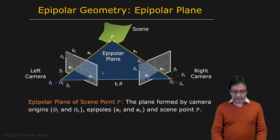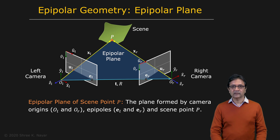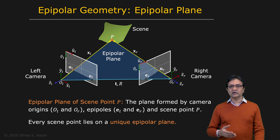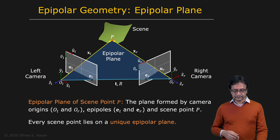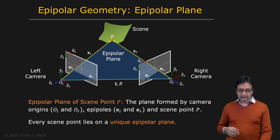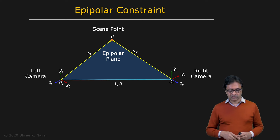Now consider the plane that includes the scene point P, the camera centers OL and OR, and which also includes the epipoles EL and ER. That is referred to as the epipolar plane corresponding to this particular point P. Each point in the scene has a unique epipolar plane, and we are going to use the epipolar plane to set up what's called an epipolar constraint that includes the parameters T and R.